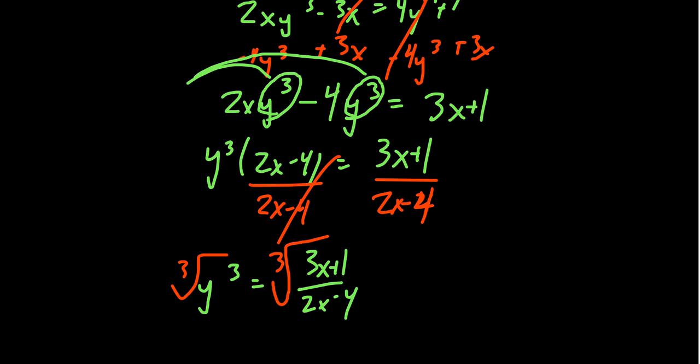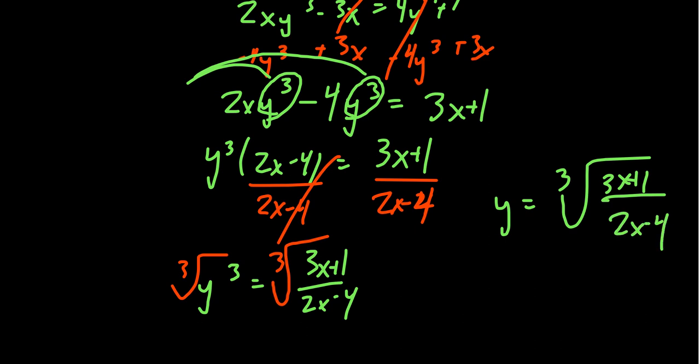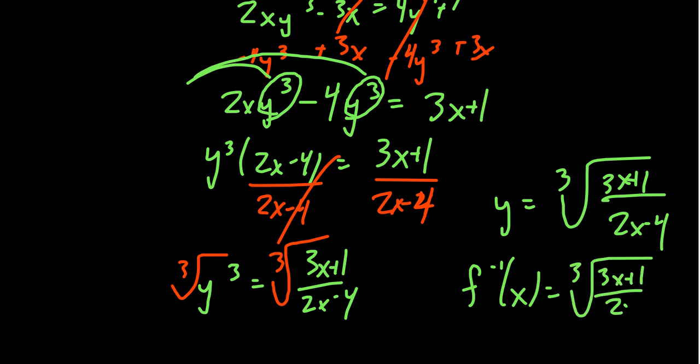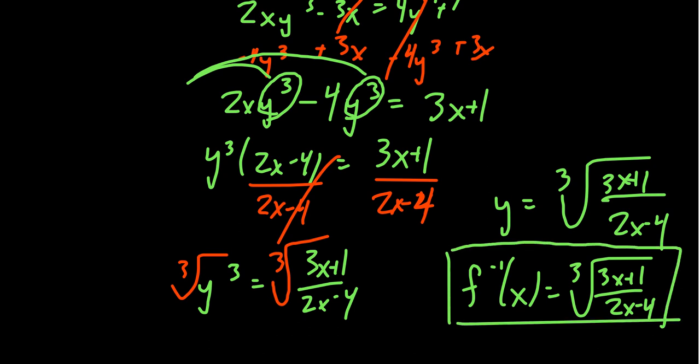To get rid of the power of three, we take the cube root of both sides. This gives us y equals the cube root of (3x plus 1) over (2x minus 4), which is our inverse function: f inverse of x equals the cube root of (3x plus 1) over (2x minus 4). In these two examples I looked at odd powers like 5 and 3. This same principle works for even powers, but we have to restrict the domain and range to ensure one-to-one behavior, and when solving equations we must include both positive and negative possibilities — we'll see that in the next video.